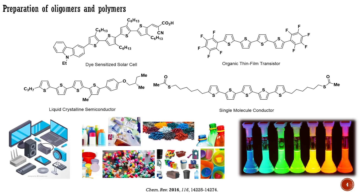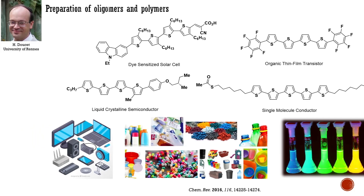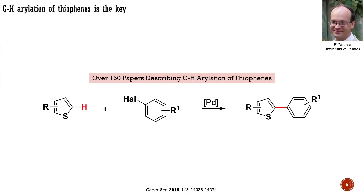Similar oligomers and polymers can be prepared using CH activation of aromatic systems. The replacement of traditional cross-couplings by modern direct CH arylations can revolutionize this field of research, as CH activations demonstrate high atom economy and sustainability. The research on thiophines conducted by the group of Doucette from the University of Wren has significantly influenced modern developments in this field.